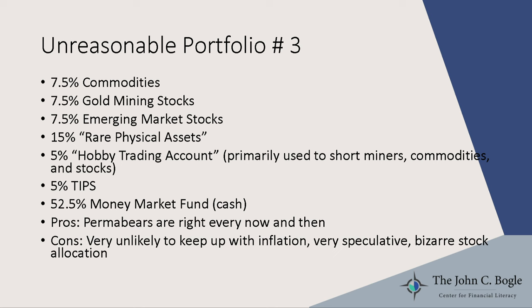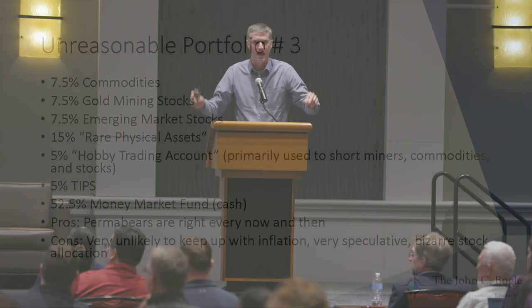Another one sent in: 7.5 percent each in commodities, gold mining stocks, and emerging market stocks; 15 percent in 'rare physical assets' — maybe Beanie Babies?; 5 percent in a hobby trading account; 5 percent in TIPS; and 52 percent in a money market. The perma-bears are right every now and then, but most of the time you don't want this weird stuff. It's unlikely to keep up with inflation, very speculative, and 100 percent of the stock allocation is in emerging markets — that's an incredible bet. Not reasonable.